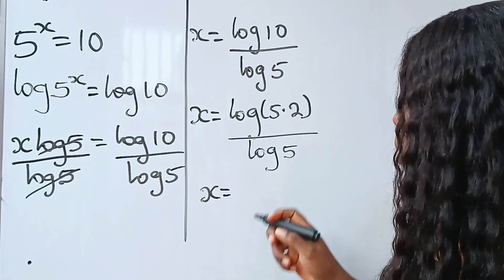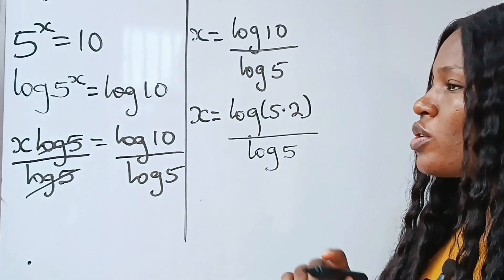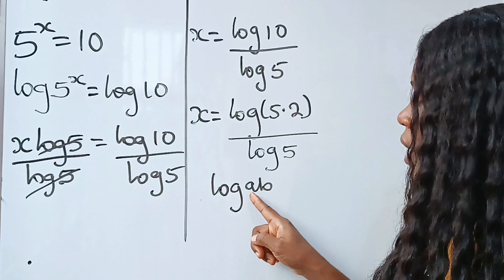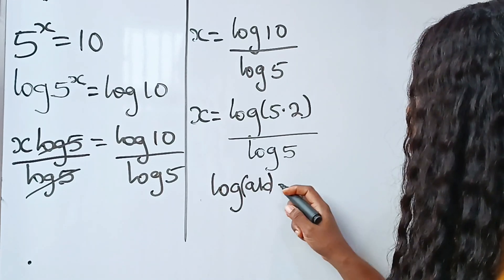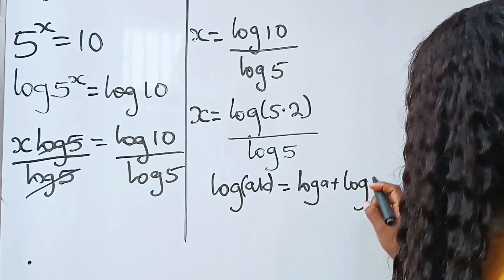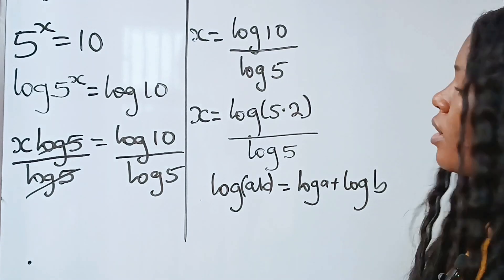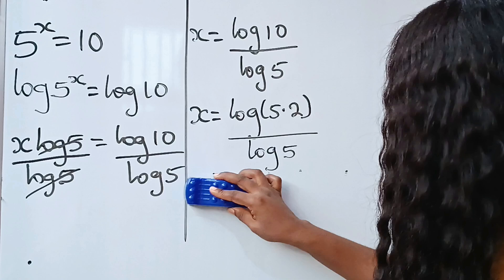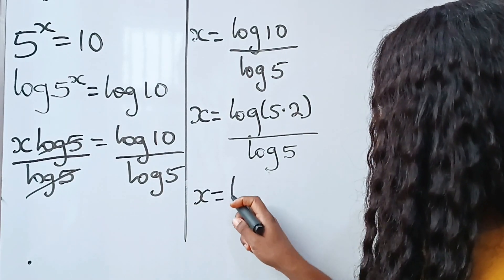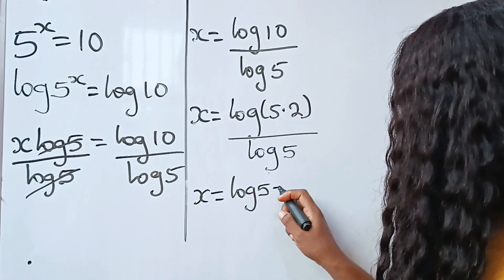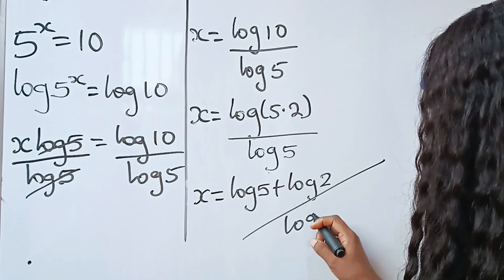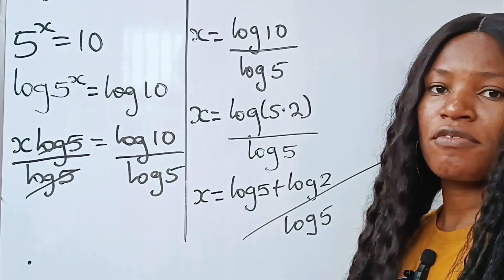Before that, note when you have log ab, that is log a multiplied by b, this is the same thing as log a plus log b. So we can express the numerator now. We can express it as x is equal to log 5 plus log 2, everything divided by log 5.